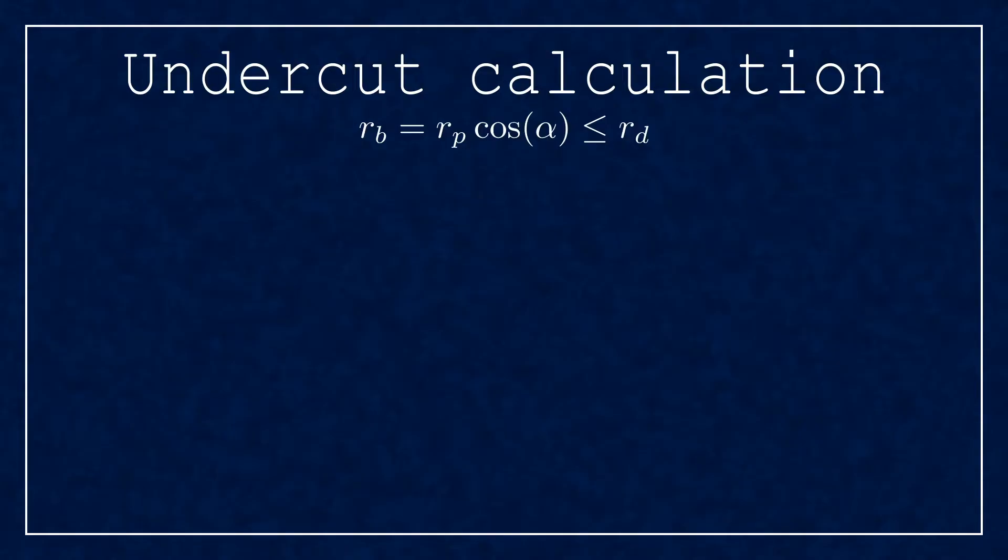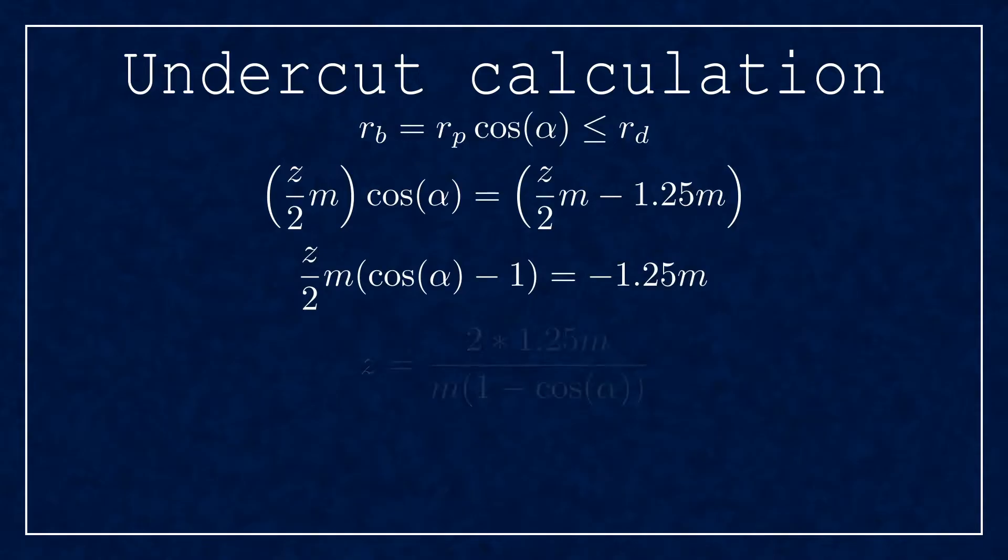In the borderline case the base radius equals the dedendum radius. Working out the equations, you'll find that you can get rid of the module, and after substituting 20 degrees into the alpha, the minimum number of teeth is about 42. This means that above 41 teeth the curve of the undercut completely disappears.